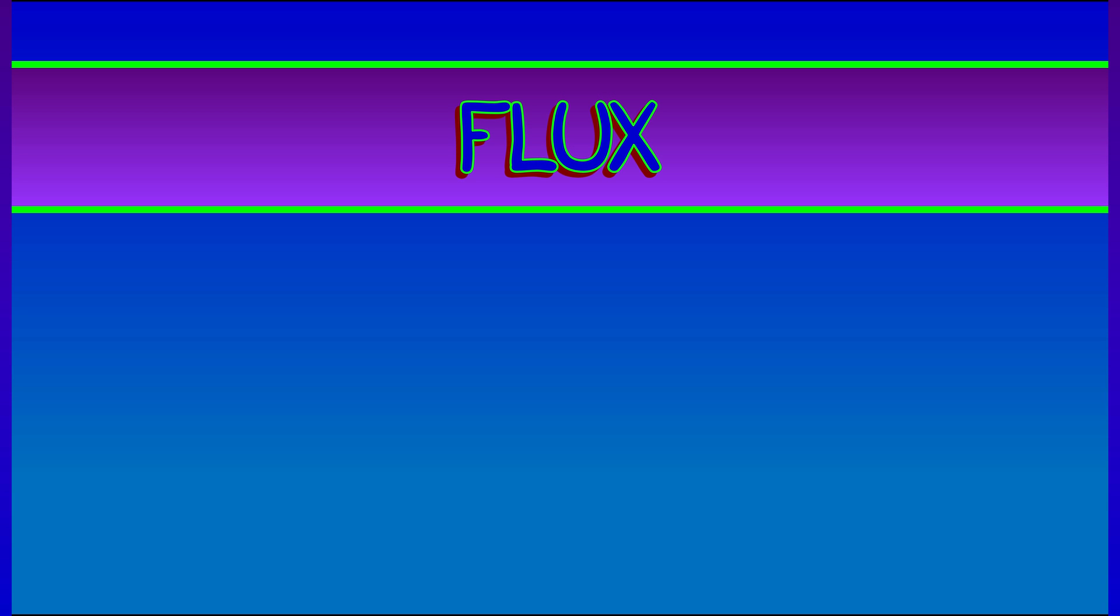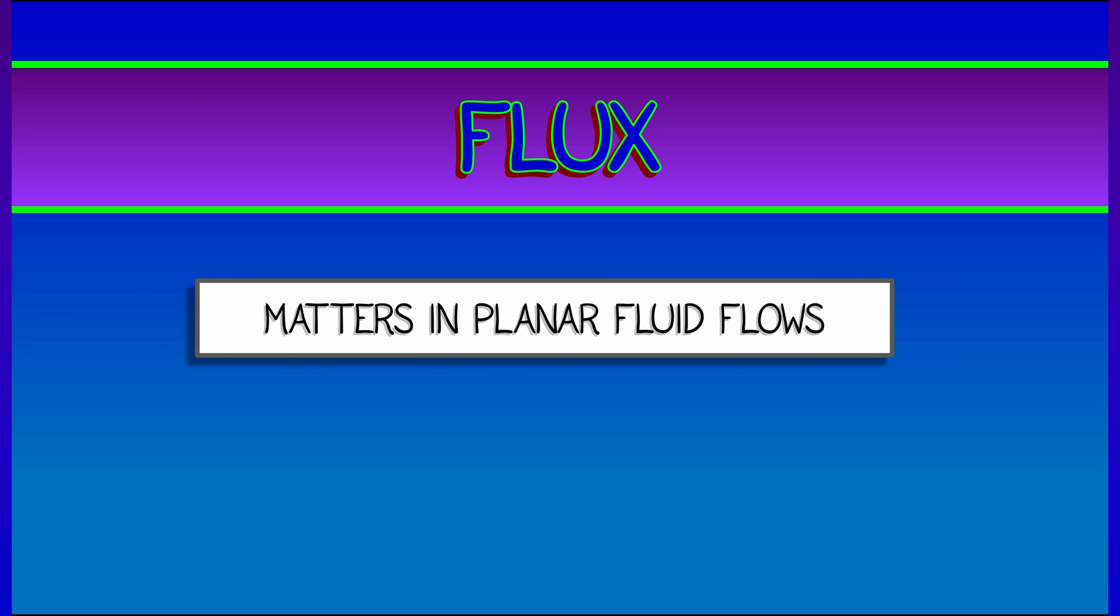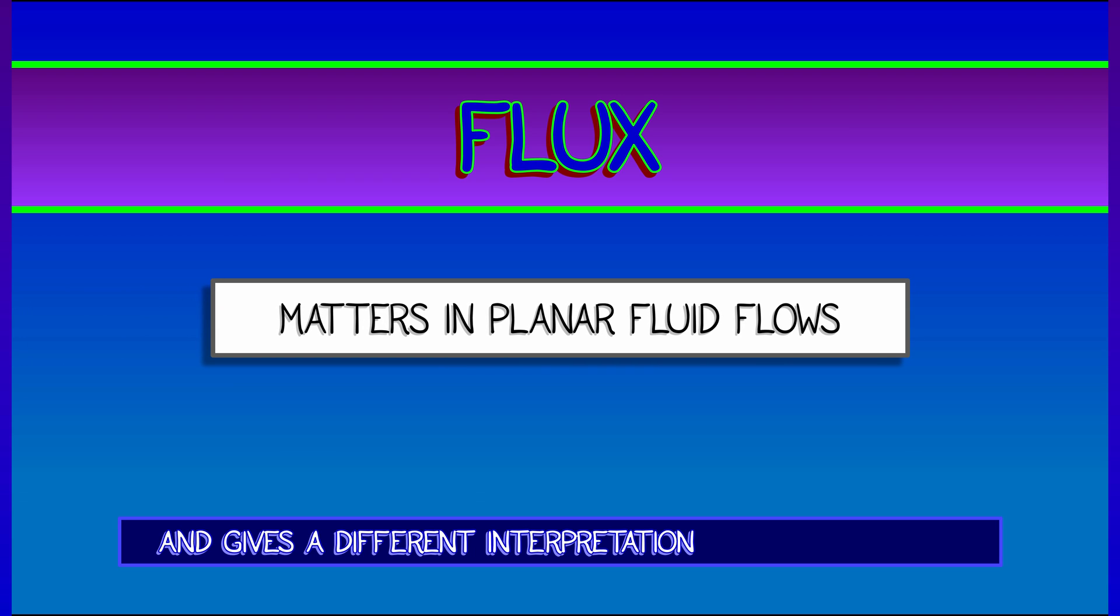There's a different physical quantity called flux that relates to how much the vector field is crossing a path or pushing stuff across a path. This gives us a different way to interpret one-form fields in the plane.